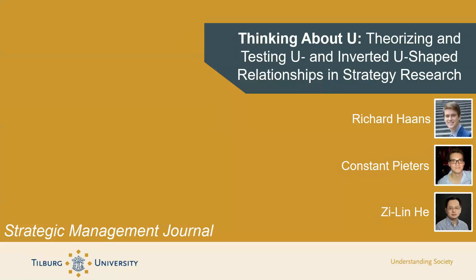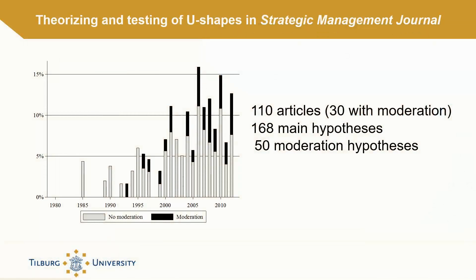My name is Richard Haans, and you are watching the video abstract for the paper Thinking About U: Theorizing and Testing U and Inverted U-shaped Relationships in Strategy Research, co-authored with Constant Pieters and Jerlin Geh from Tilburg University, the Netherlands. Our research was motivated by a recent surge in the investigation of U and inverted U-shaped relationships in strategy research.